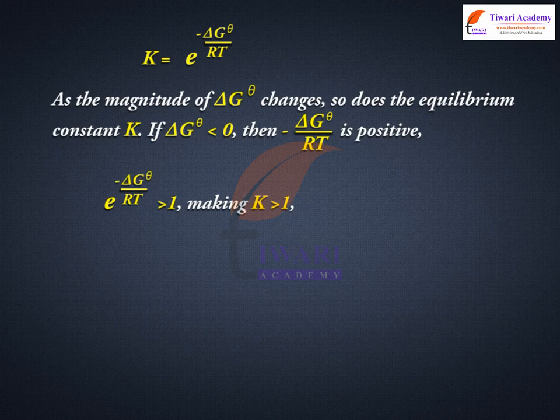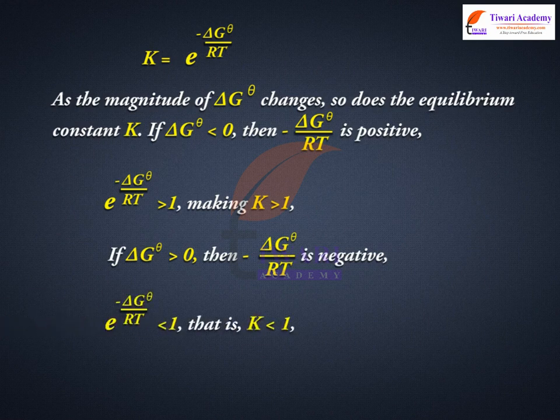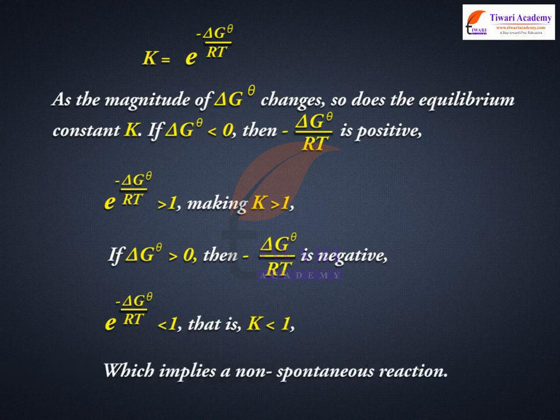If delta standard G is greater than 0, then minus delta standard G upon RT is negative and e raised to the power minus delta standard G upon RT is less than 1, that is K is less than 1, which implies a non-spontaneous reaction.